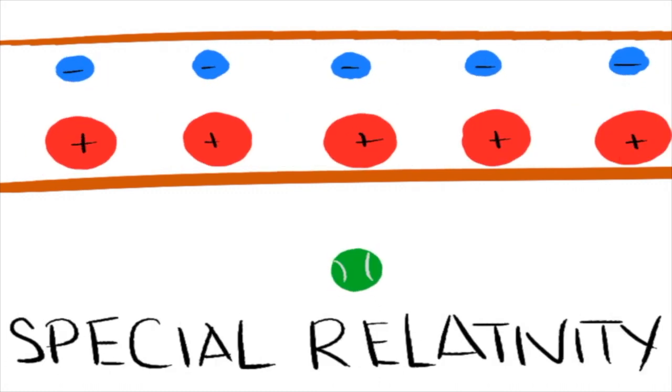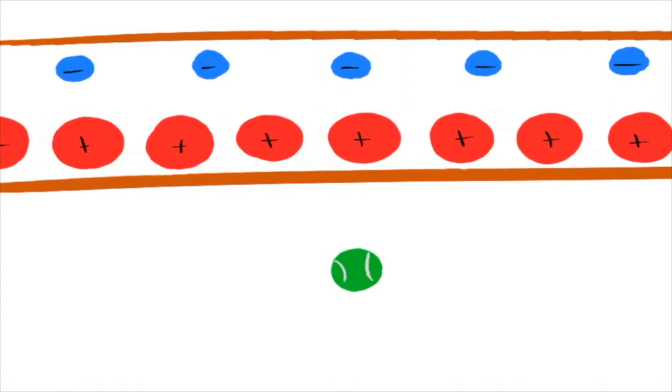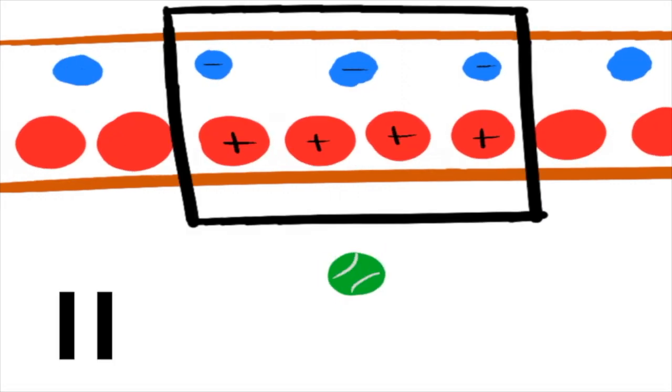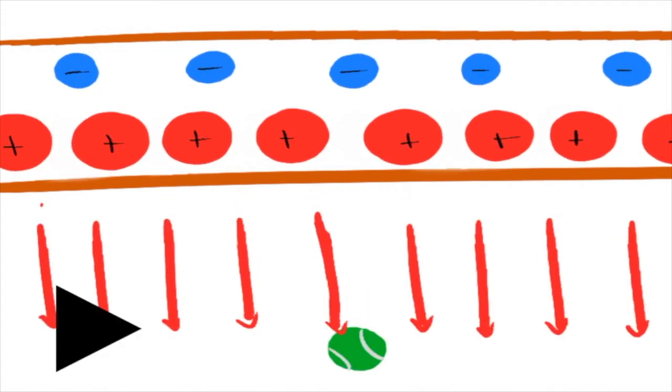Special relativity says that since they're moving faster than the ball, they appear closer together. So now, there's more positive charge in each part of the wire. The positive electric field pushes the ball away.